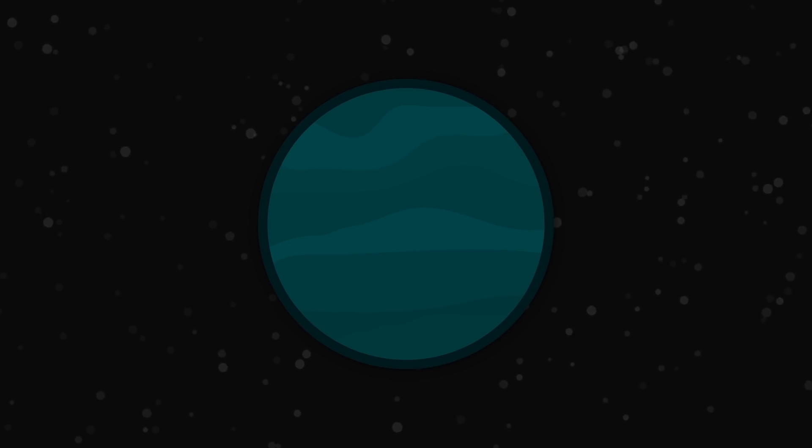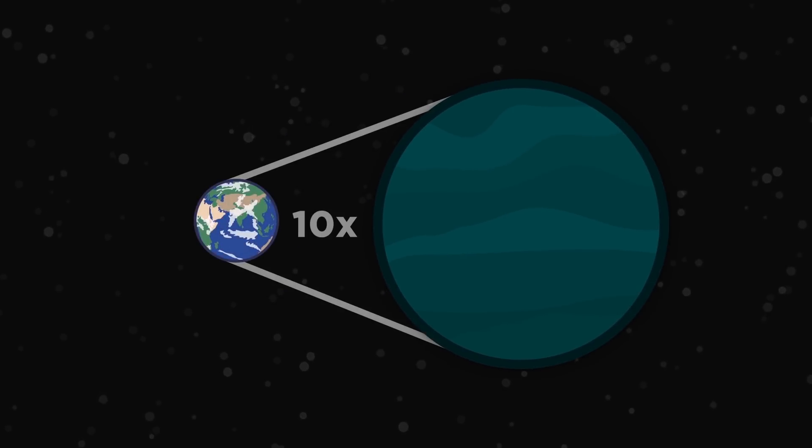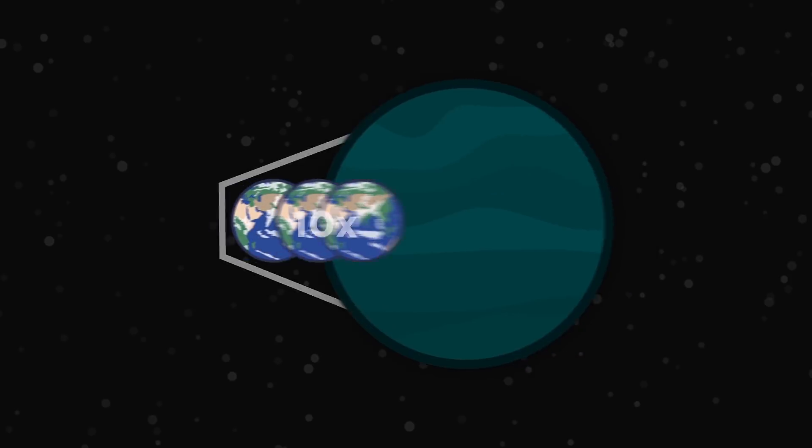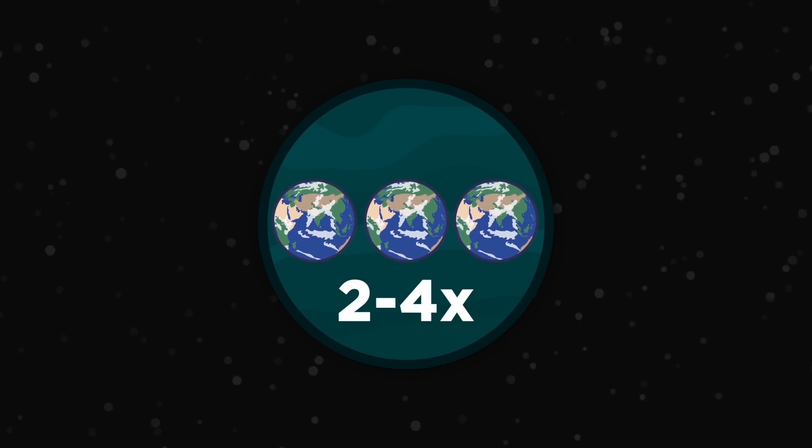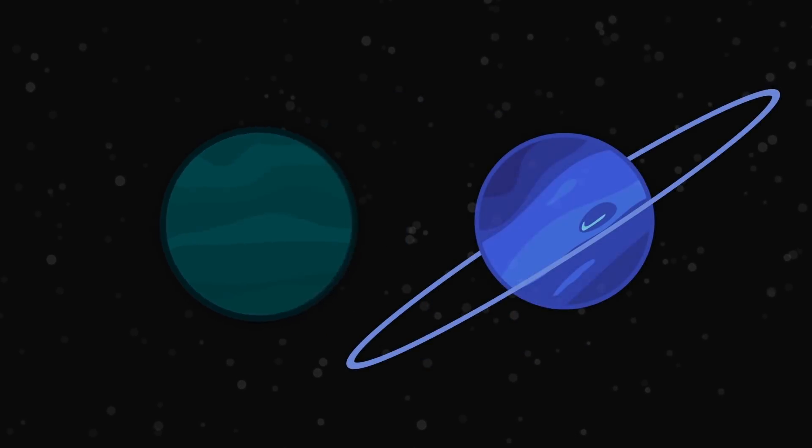If this turns out to be true, the model suggests that the planet has about 10 times the mass of Earth and about two to four times Earth's diameter, making it roughly the same size as the planet Neptune.